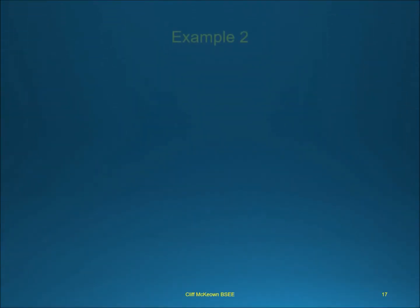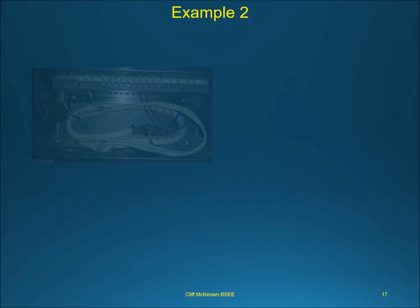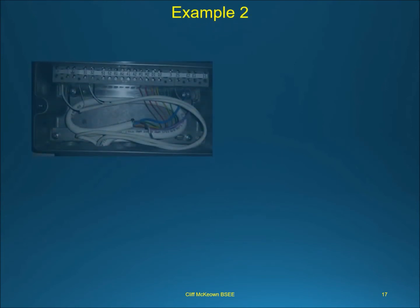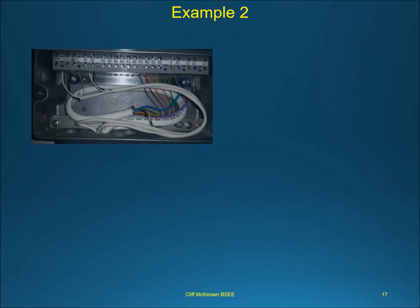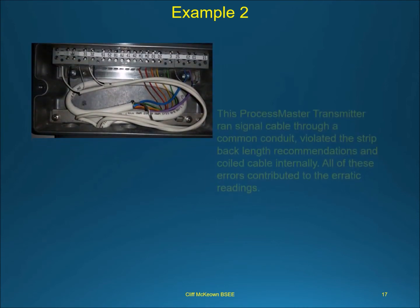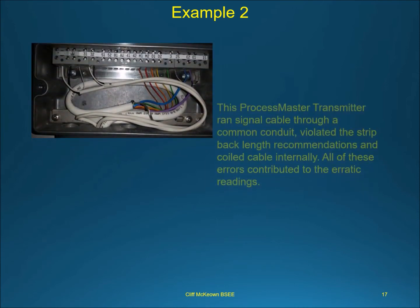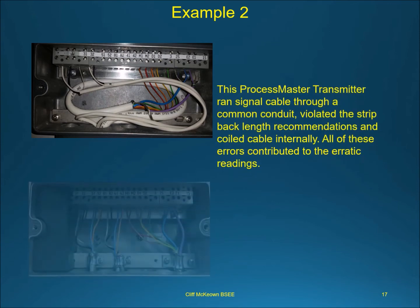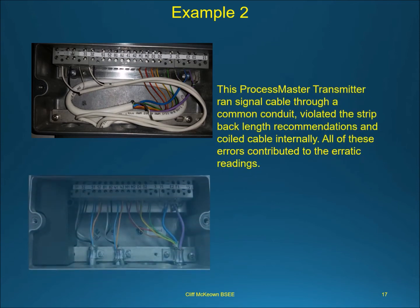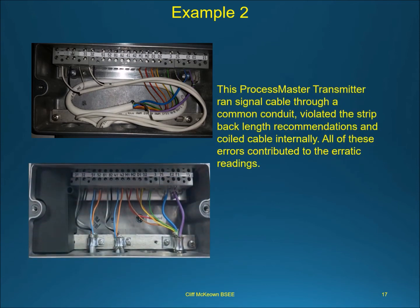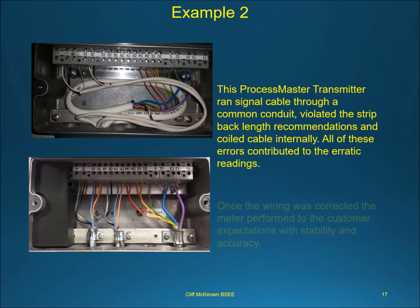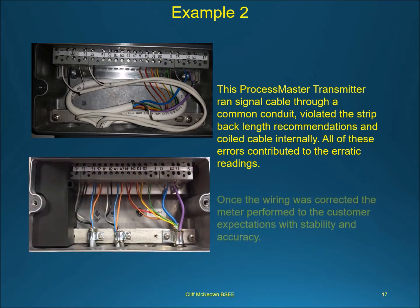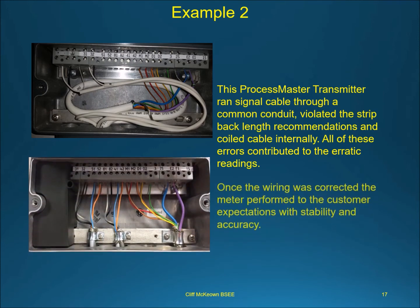Example 2. This Process Master transmitter ran signal cable through a common conduit, violated the strip-back length recommendations, and coiled cable internally. All of these errors contributed to the erratic readings. Once the wiring was corrected, the meter performed to the customer's expectations with stability and accuracy.